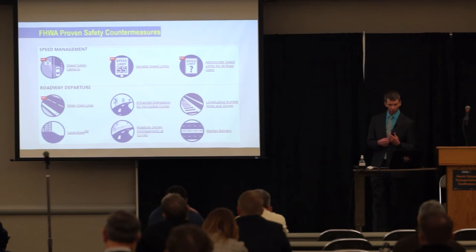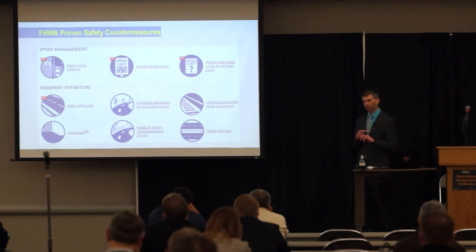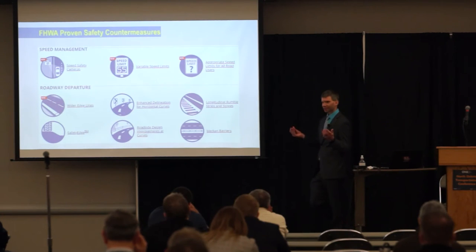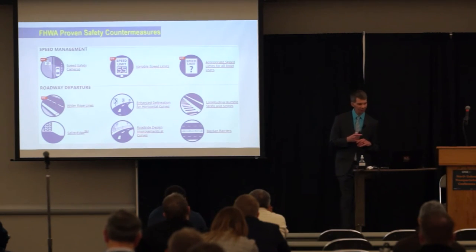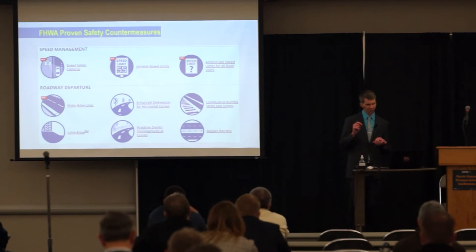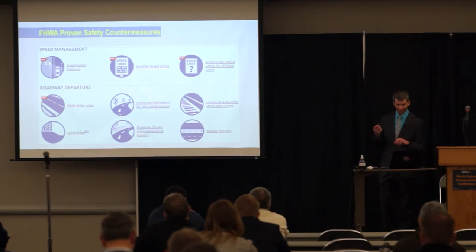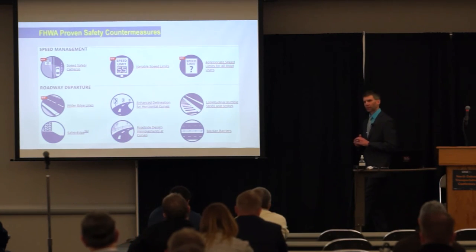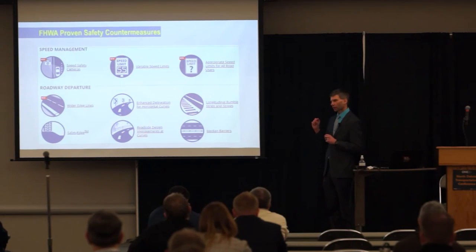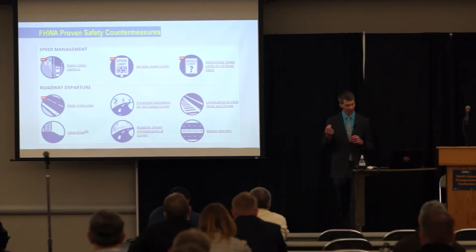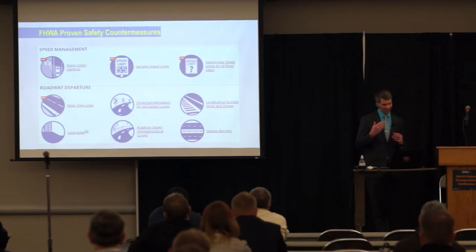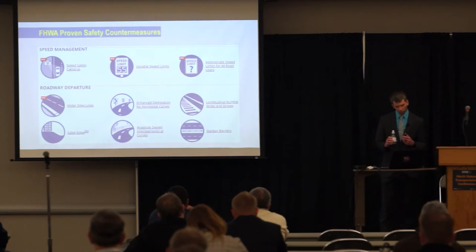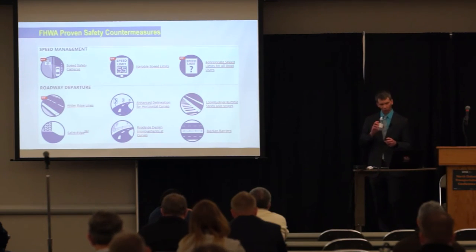Federal Highway has a list of proven safety countermeasures broken into five categories, each with infrastructure safety countermeasures. The first category is speed management. One you can see on roadway systems is the variable speed limit signs, formerly called dynamic speed display signs — they're now being called vehicle speed feedback signs in the upcoming MUTCD update. The next category is roadway departure. This is our big one — most of our fatal crashes in North Dakota come from roadway departure, being such a rural state. There are many simple, low-cost strategies to reduce roadway departure crashes.